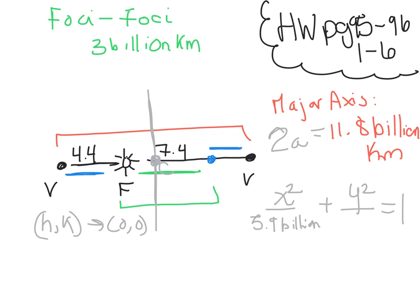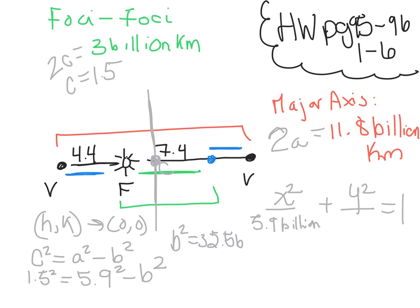And then I've got to find b. But to find b, that's going to do a little bit of math because this up here is 2c. Foci to foci is 2c, and I know what a is, so I know that c is equal to 1.5. And then we have to use our little equation where c squared equals a squared minus b squared. So 1.5 squared is going to equal my 5.9 squared minus b squared. And when you solve for b squared, b squared is 32.56, and then you have to square root it. My b value is 5.706 billion. So there is the equation for Pluto's elliptical orbit.